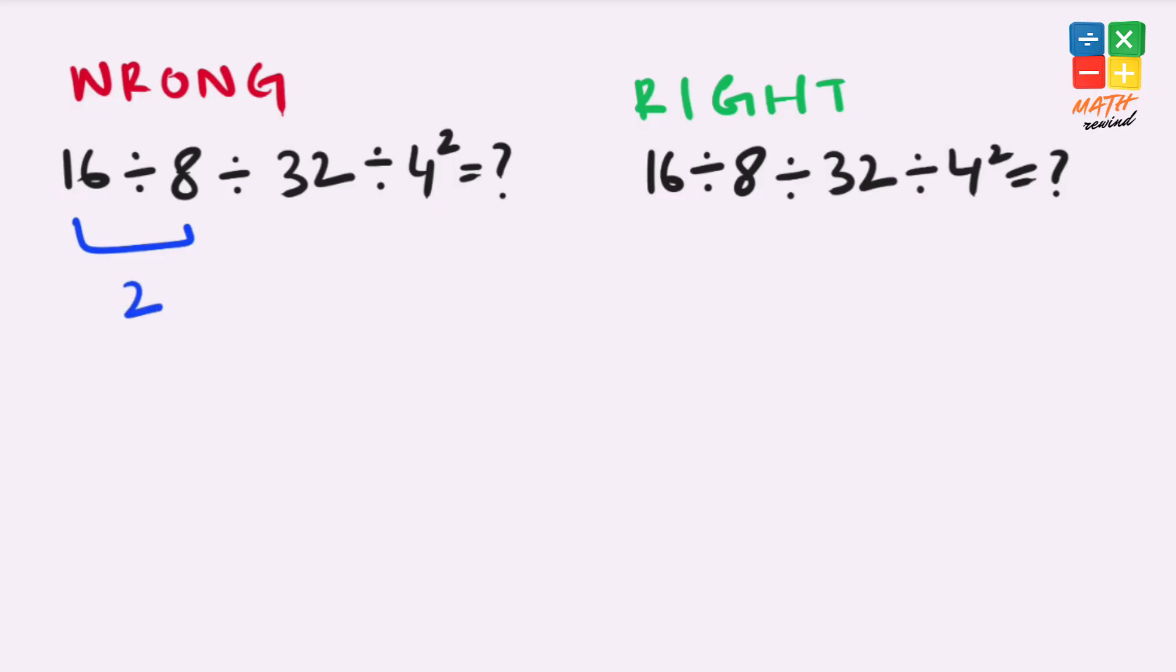16 divided by 8 equals 2, and here we have 4 squared which equals 16. So 32 divided by 16 also equals 2. 2 divided by 2 gives us 1, which seems right, but this answer is not correct because according to the order of operations